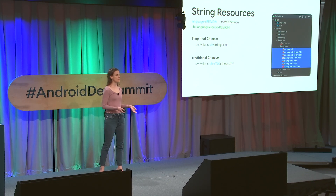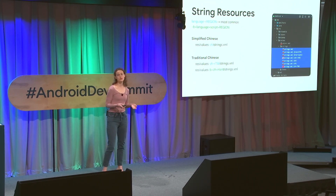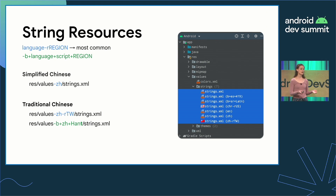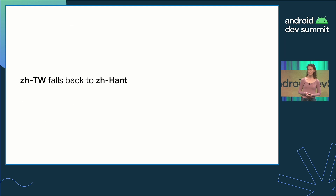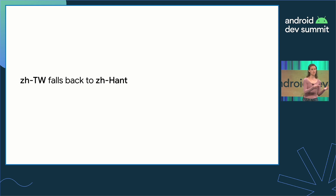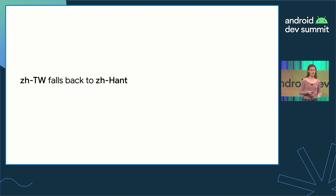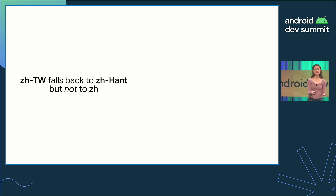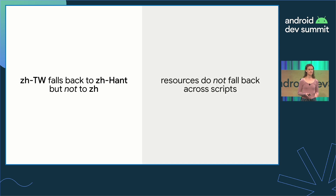In Android 7, we added support for scripts. So we might place our fallback string resources in a zh-Hant folder — Hant here stands for the traditional Chinese script. If Android cannot find the correct string resource for a user living in Taiwan in the appropriate folder, it will fall back to a more generic folder, in this case the Hant folder, and then ultimately fall back to your app's default locale. However, Android will not fall back to the zh folder because it contains simplified Chinese strings, and simplified Chinese and traditional Chinese are different scripts. In other words, when organizing your app resources, be mindful that resources do not fall back across scripts.